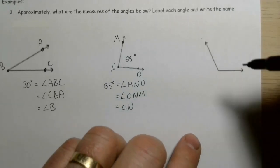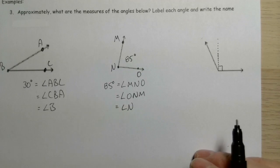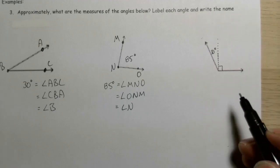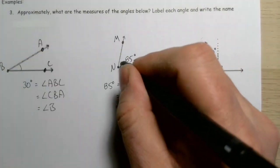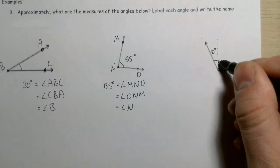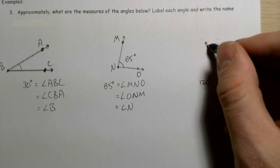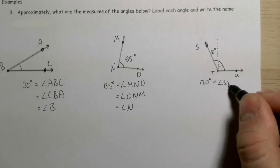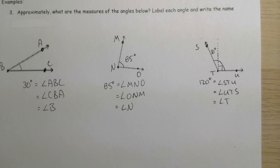This last one is a little more complicated because it's an obtuse angle. Roughly 90 degrees gets me to here, and then what's the remaining part? It's not halfway to the middle, so that's maybe another 30 degrees. So altogether I'm thinking that's maybe 30 plus 90 = 120 degrees. Let's call this S, T, U, so that could be angle STU, angle UTS, or angle T.